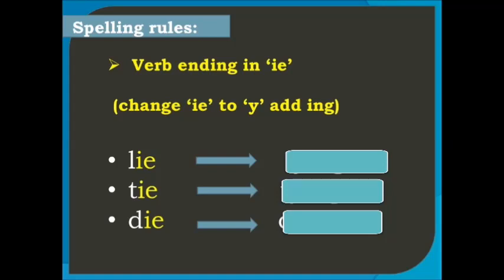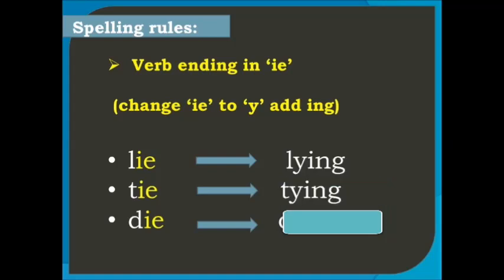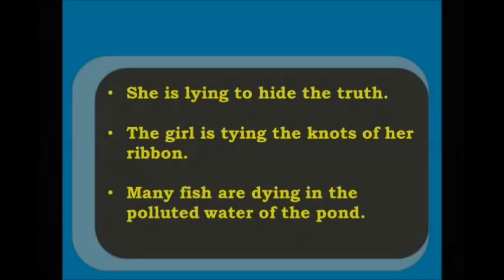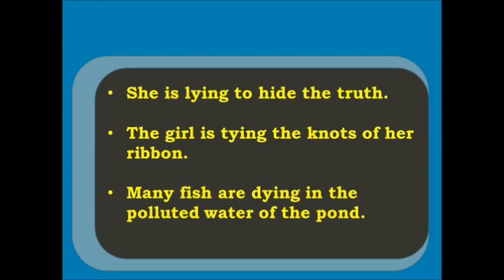When the verb ends in ie, change the ie to y and add ing. For example: lie → lying, tie → tying, die → dying. For example: She is lying to hide the truth. The girl is tying the knots of her ribbon. Many fish are dying in the polluted water of the pond.